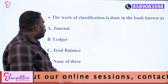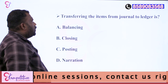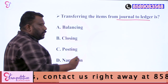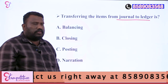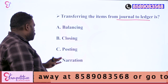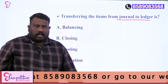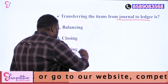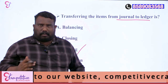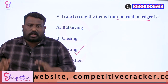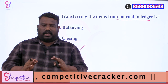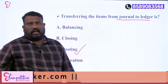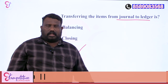Next question: transferring items from journal to ledger. What do we call this process? Option A is Balancing. Option B is Closing. Option C is Posting. Option D is Narration. What do we need to do in the ledger? The answer is Posting to the ledger.